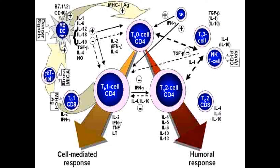Once differentiated into Th1 with the help of interleukin-12, interferon-gamma will down-regulate Th2. The other factors playing a major role are interleukin-2 and tumor necrosis factor. Interleukin-2 is necessary for clonal expansion, meaning there will be an autocrine reaction in which the T helper cells proliferate and make multiple copies of themselves in preparation for a second exposure or to eliminate all tuberculosis-affected cells.